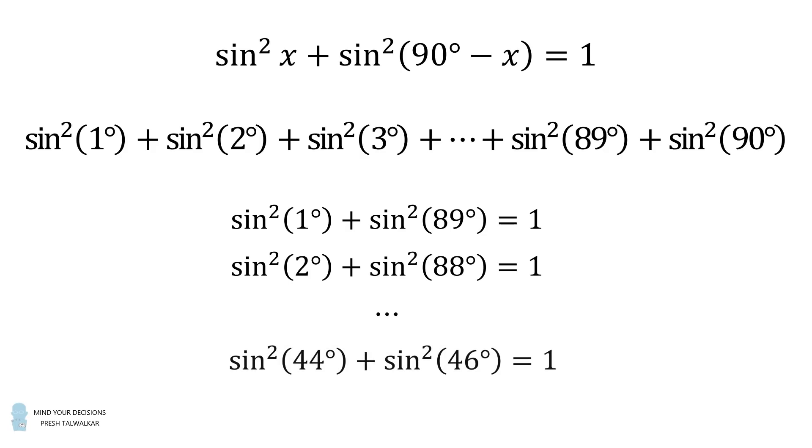This pattern continues until we get to sine squared of 44 degrees plus sine squared of 46 degrees, and that sum will also be equal to 1. These 44 pairs will have a total sum equal to 44.